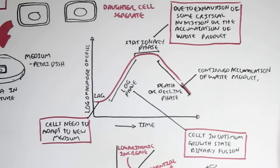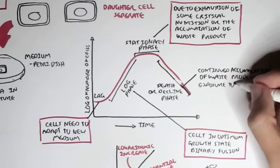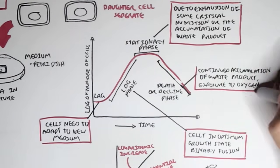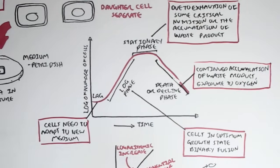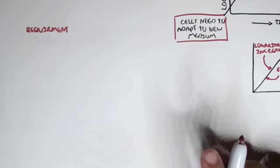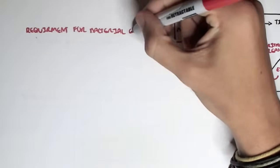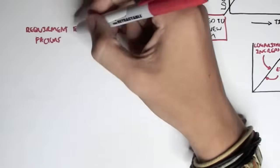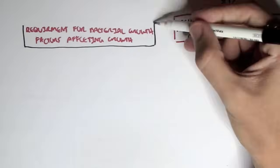I hope that made sense. The graph I just drew showed us the four phases of bacterial growth. But of course, the growth had to be under good conditions, under laboratory conditions. So essentially, there are requirements for bacterial growth. There are many factors which influence bacterial growth.